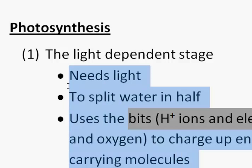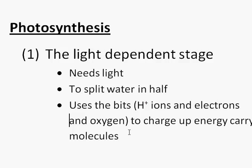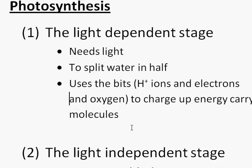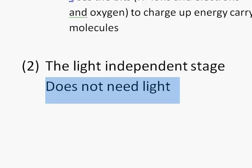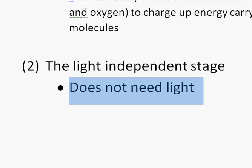So this is the key event in the light-dependent stage: we make energy-carrying molecules. These energy-carrying molecules are then used to build food. The food that plants make is called glucose.